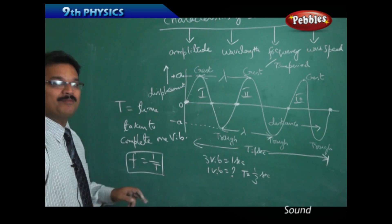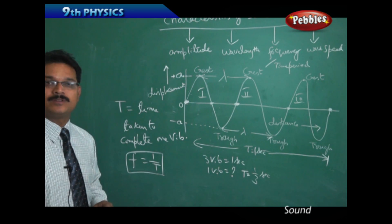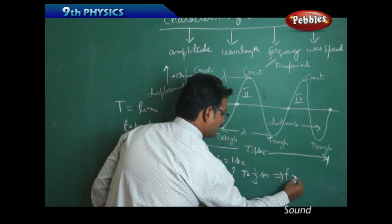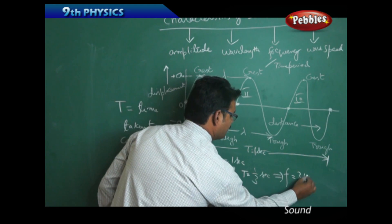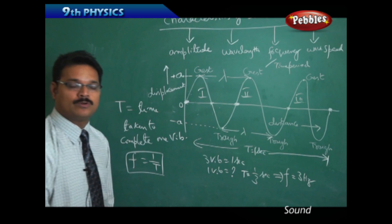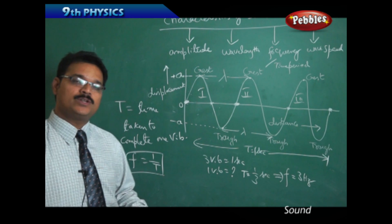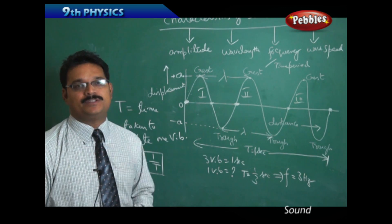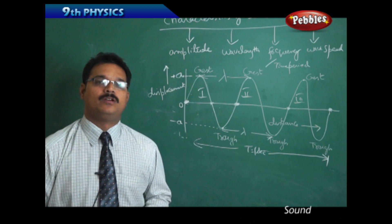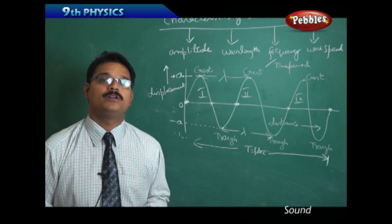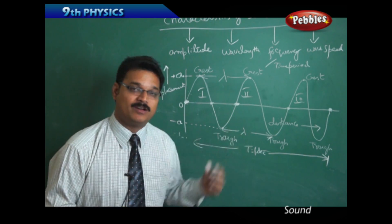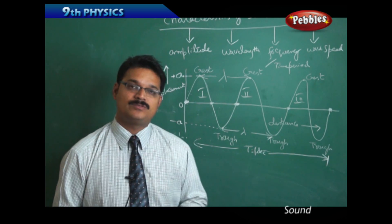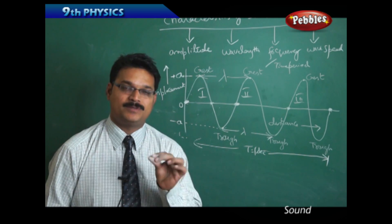Frequency is the reciprocal of time period. So if T = 1/3, the frequency is three Hertz. When you know frequency you can find time period, and when you know time period you can find frequency. Now we come to a very important formula — important not only in sound but in the entire wave chapter.